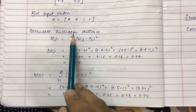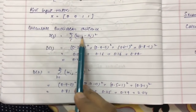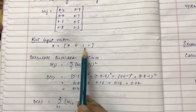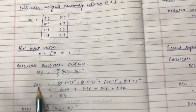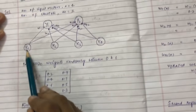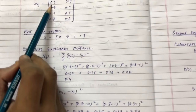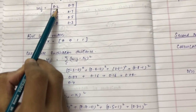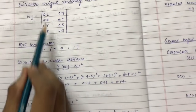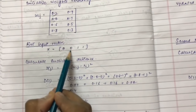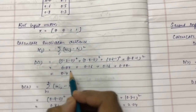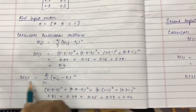For the first input vector x = (0, 0, 1, 1), we calculate the Euclidean distance. d1 represents the squared Euclidean distance between cluster y1 and input vector x1: (0.2 - 0)² + (0.4 - 0)² + (0.6 - 1)² + (0.8 - 1)² = 0.4.